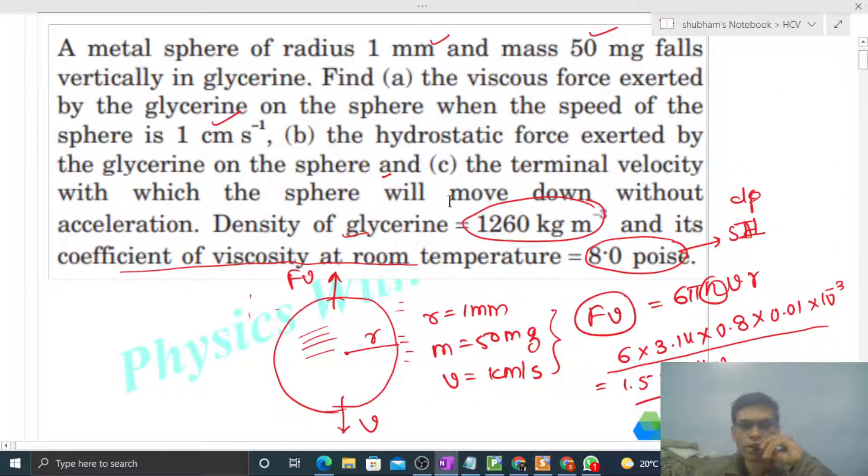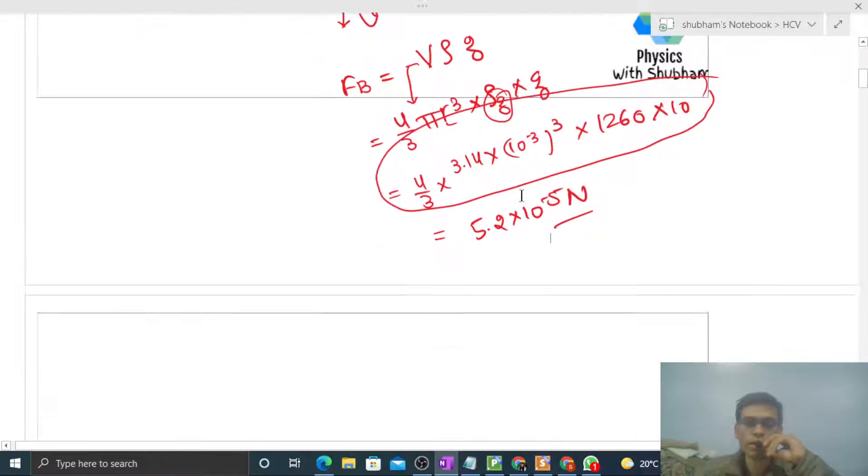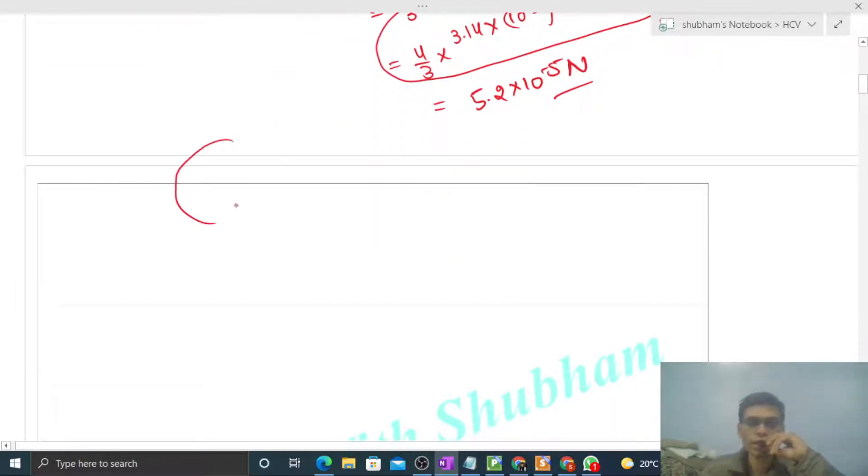Now let's check part c: find the terminal velocity with which the sphere will move down without acceleration. Terminal velocity means the acceleration of this metal sphere will be zero.